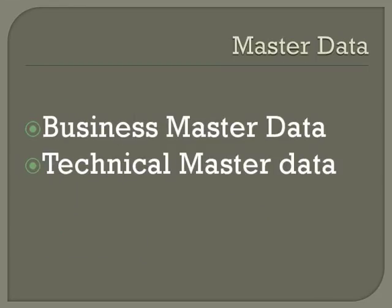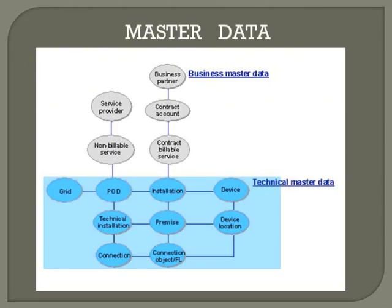Coming to master data — in SAP ISU master data we have two categories: business master data and technical master data. Business master data comprises three main categories. The first is the business partner, created using the cross-application component with a partner role of contract partner. A contract partner can receive one or more utility services. For each contract partner, we separately create a contract account using the FICA component. Contract accounts offer great flexibility — one contract account can be assigned to a group of business partners, or we can have individual contract accounts per division. Contract accounts are possible only when implementing FICA.